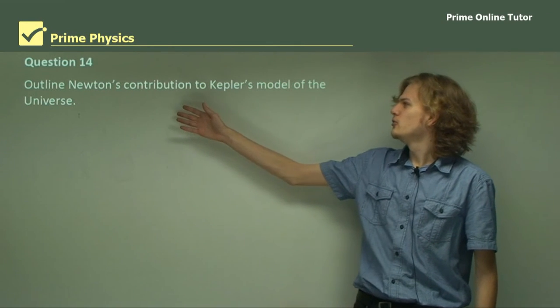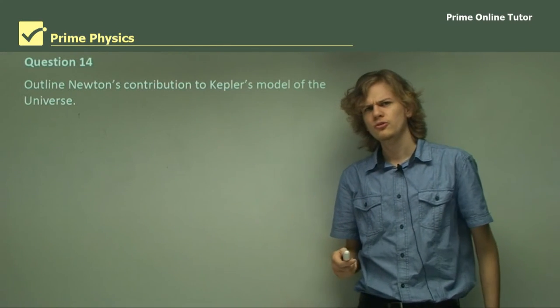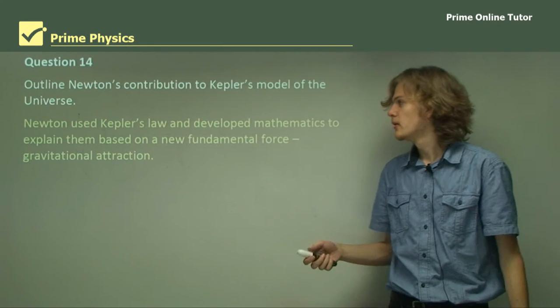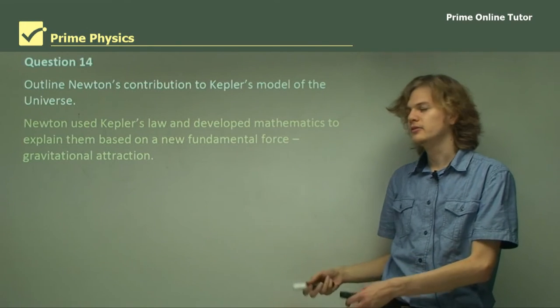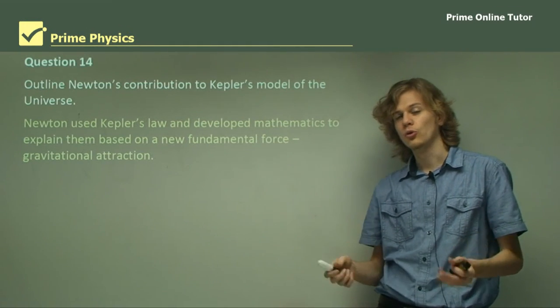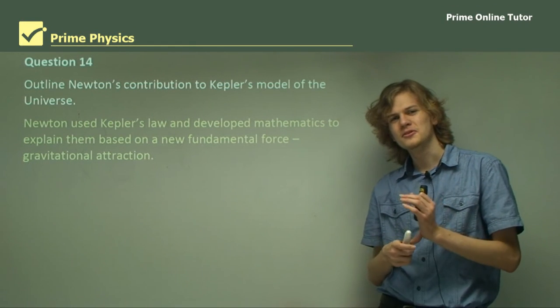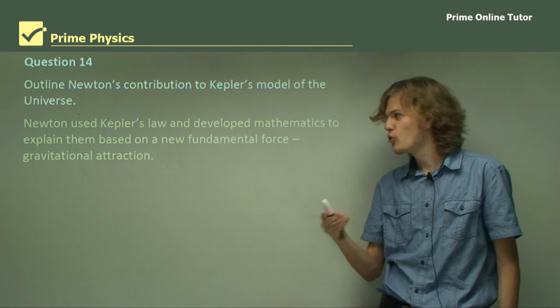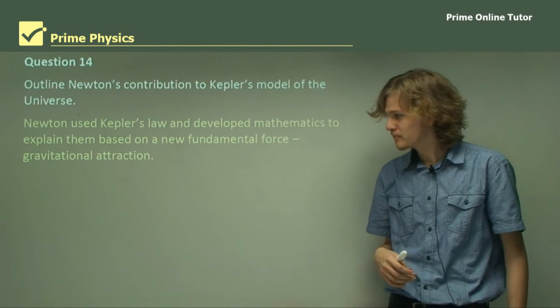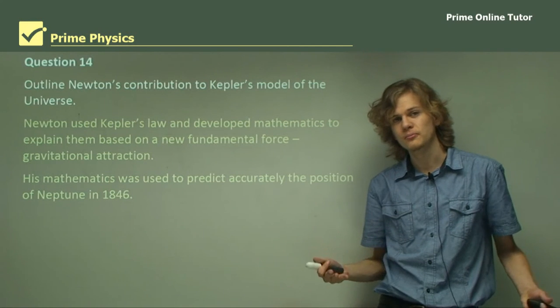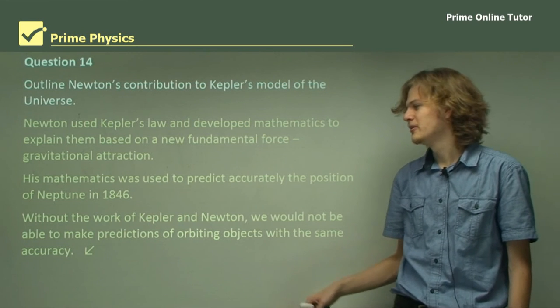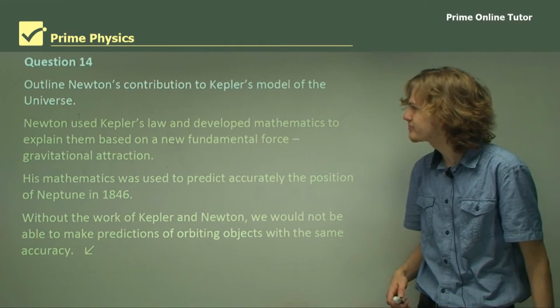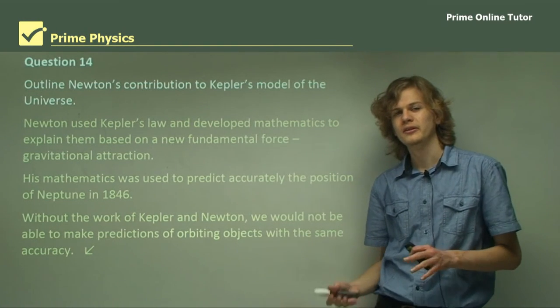Question 14: Outline Newton's contribution to Kepler's model of the universe. Newton used Kepler's law to develop a mathematical model of the universe. He was able to develop mathematics and explain all of the observations of Kepler: the law of ellipses, law of areas, and the law of periods. He explained them based on a new fundamental force that had never been heard of before called gravity or gravitational attraction. His mathematics were used to predict very accurately the position of Neptune in 1846. Without the work of Kepler and Newton, we would not be able to make observations on the universe with very much accuracy.